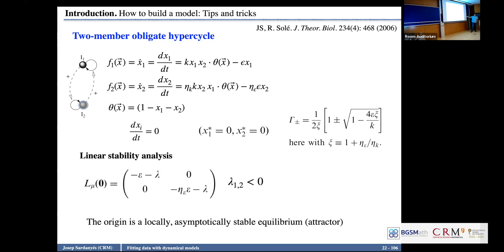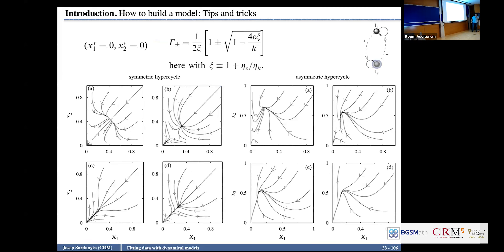When we perform linear stability analysis and compute the eigenvalues around the origin, we get minus epsilon and minus epsilon — both negative — so this is a locally asymptotically stable equilibrium. These are phase portraits for this system obtained numerically. Here we have the symmetric hypercycle where eta-K, eta-epsilon, and eta are all one, so the rates of synthesis and degradations are the same for both species, and the equilibrium points are placed on the diagonal.